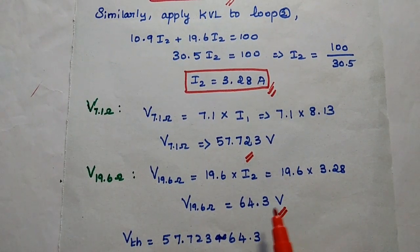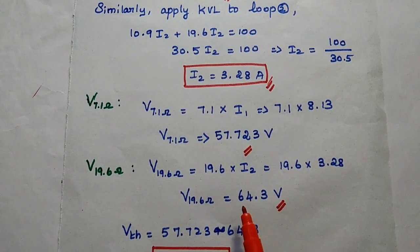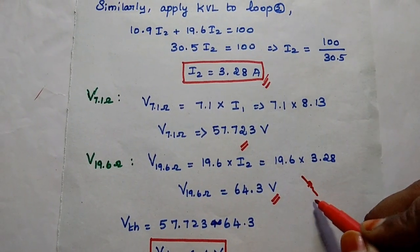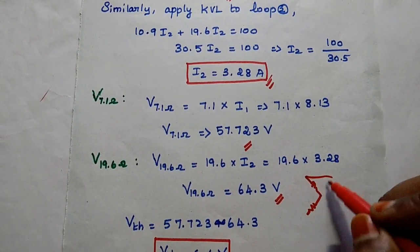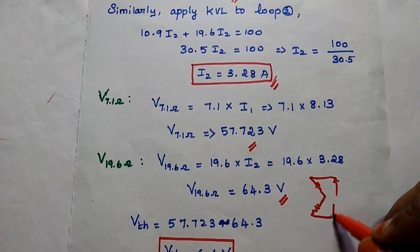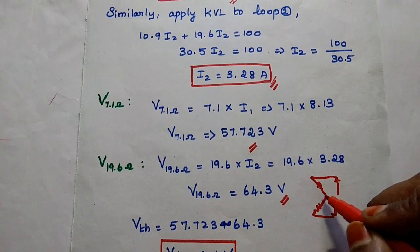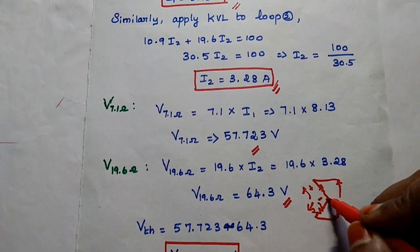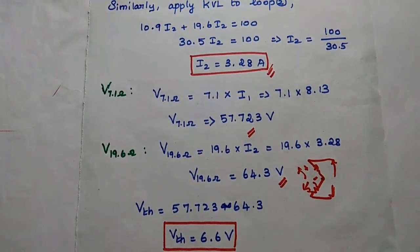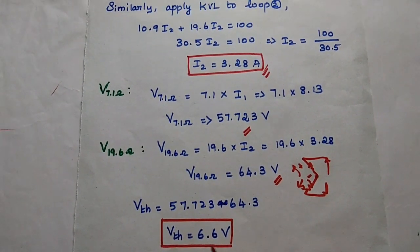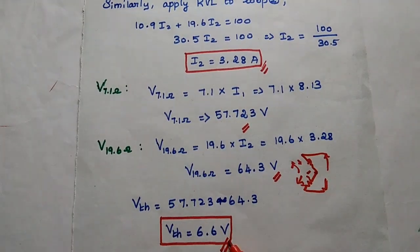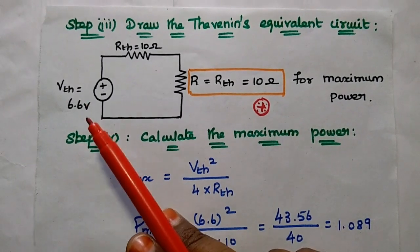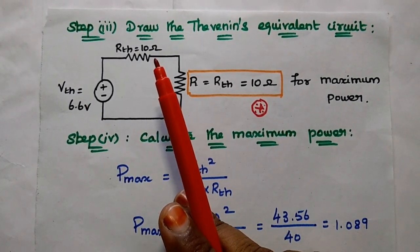The voltage drop across 19.6 ohm is equal to 19.6 multiplied by I2, which is 3.28, giving 64.3 V. In the circuit, one resistor is on one side and another on the other side. The polarity signs are opposite to each other, so we take the difference between these two values, giving the Thevenin's voltage as 6.6 volts. Next we draw the Thevenin's equivalent circuit with Thevenin's voltage 6.6 V and Thevenin's resistance 10 ohm.